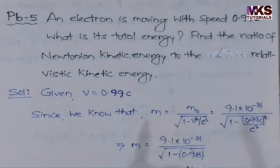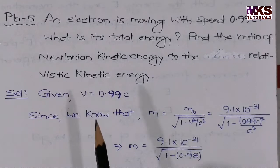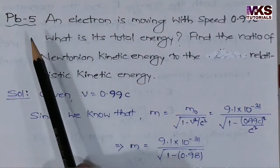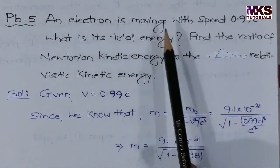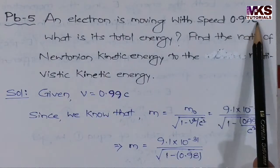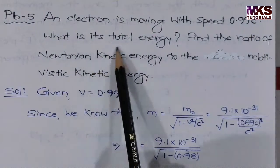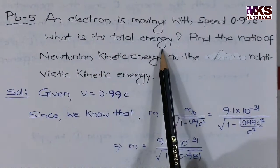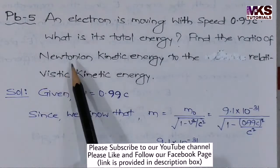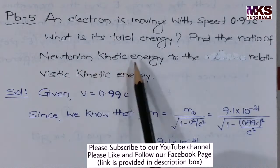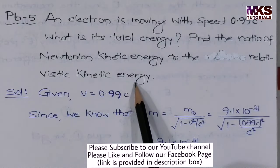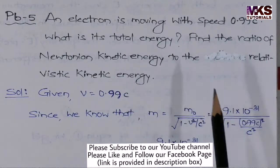Next, important question. An electron is moving with speed 0.99c — what is its total energy? First part: find the total energy. Second part: find the ratio of Newtonian kinetic energy to the relativistic kinetic energy.